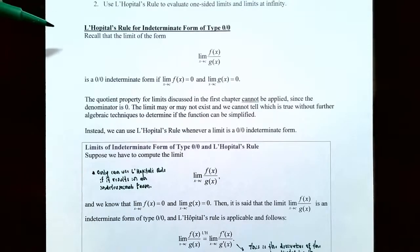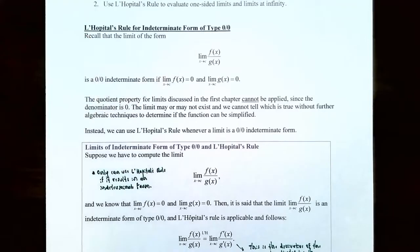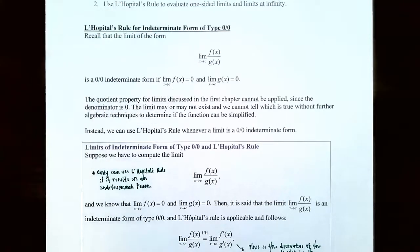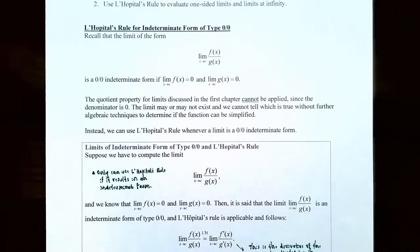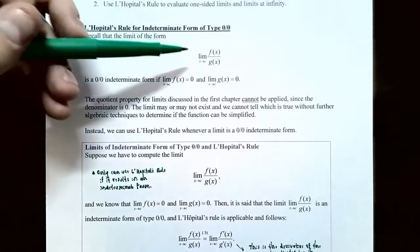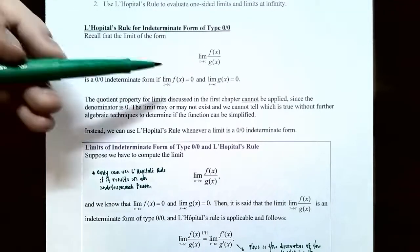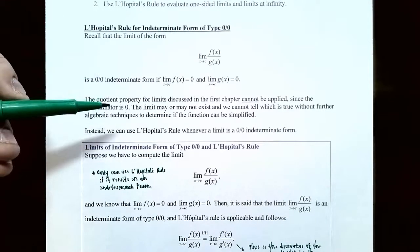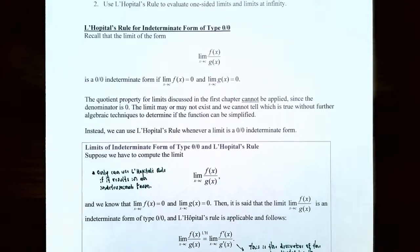L'Hôpital's rule for indeterminate forms of type 0 divided by 0. Recall that the limit as x approaches c of f(x) divided by g(x) is a 0/0 indeterminate form if the limit of the numerator as x approaches c is 0 and the limit of the denominator as x approaches c is also 0. The quotient property for limits cannot be applied here because the limit of the denominator is 0. The limit may or may not exist, and we cannot tell without further techniques.